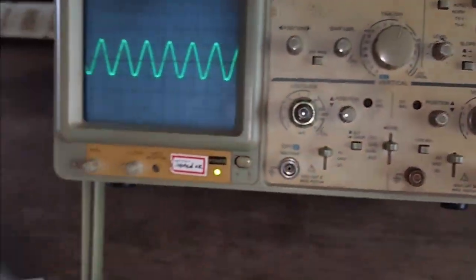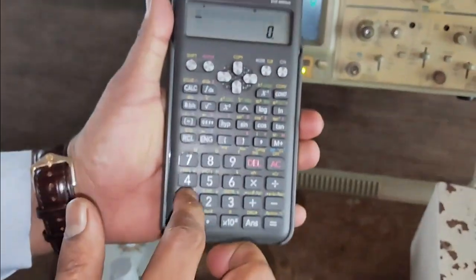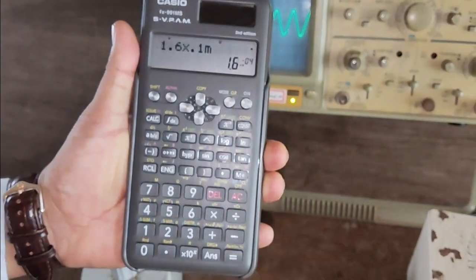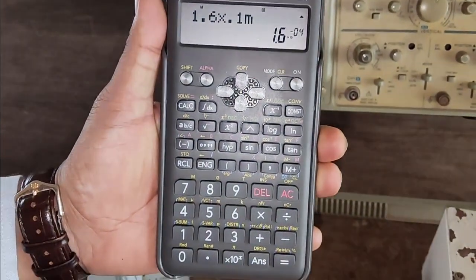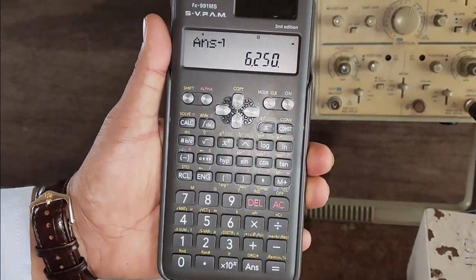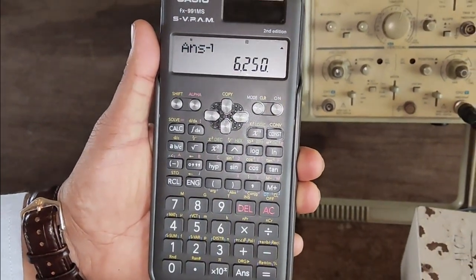Let's calculate it with the help of calculator. 1.6 into 0.1 millisecond, that is 1.6 into 10 to the power of minus 4. When I reciprocal it, it is 6.25 kilohertz.